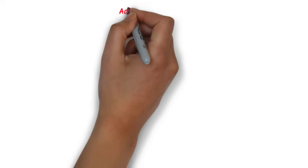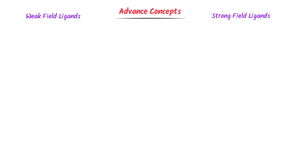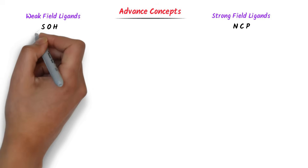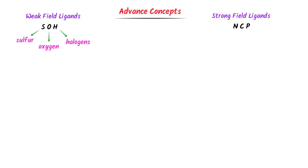Now we learn some advanced concepts of color and coordination compounds to crack any JEE Main question. Remember this easy trick for weak field and strong field ligands: SOH-NCP. SOH — where S stands for sulfur, O stands for oxygen, and H stands for halogens. Ligands in which the donor atom is sulfur, oxygen, or a halogen are weak field ligands. Remember that weak field ligands cause smaller splitting of d-orbitals.